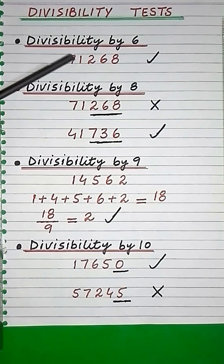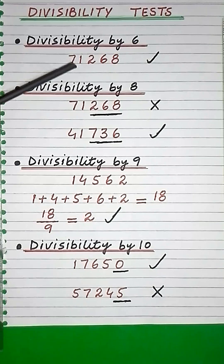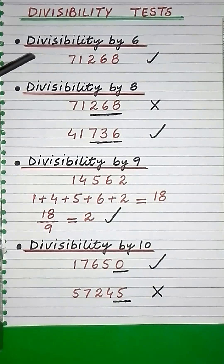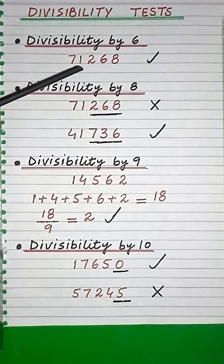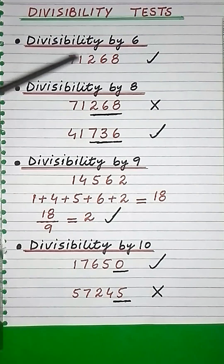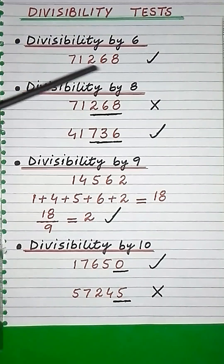A number is divisible by 6 only if it is divisible by both 2 and 3. Like this number is divisible by both 2 and 3, so it is also divisible by 6.